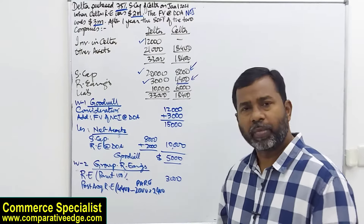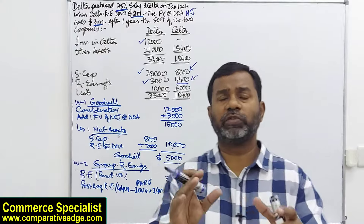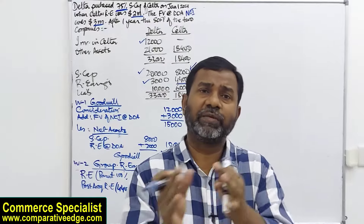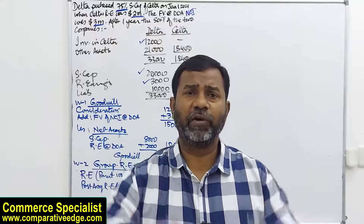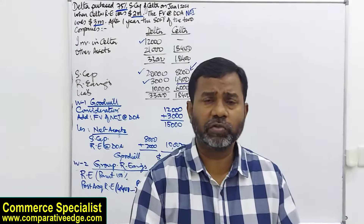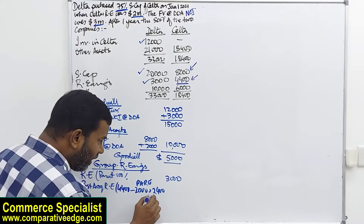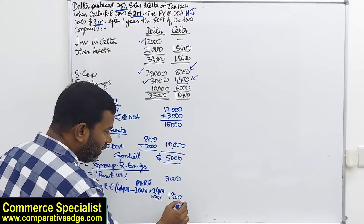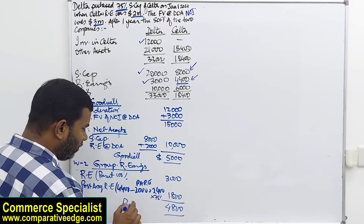The 2,400 is the post-acquisition retained earnings — profit earned by the subsidiary after the parent's acquisition. Since the parent holds 75 percent, the parent's share in post-acquisition retained earnings is 75 percent of 2,400, which comes to 1,800. Adding 3,000 plus 1,800 gives group retained earnings of 4,800 — also called group reserves.